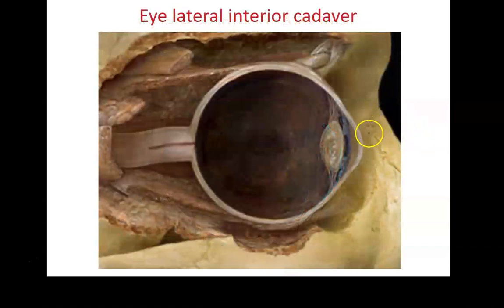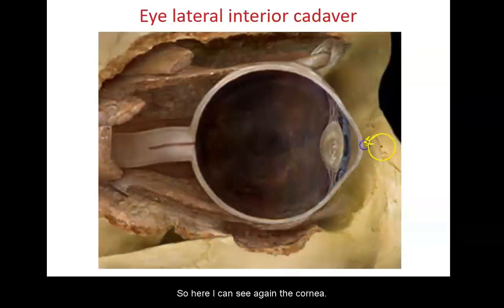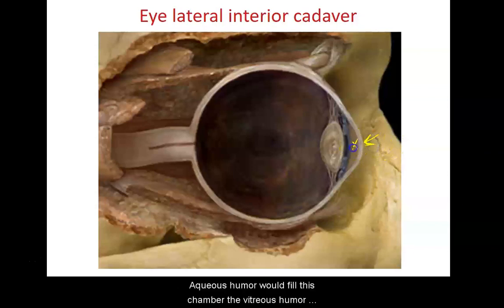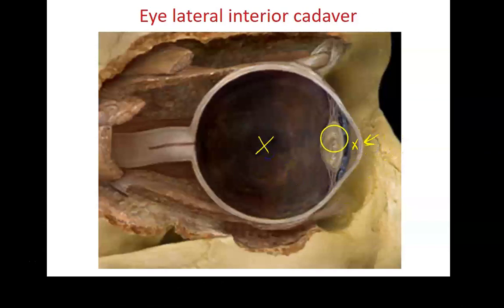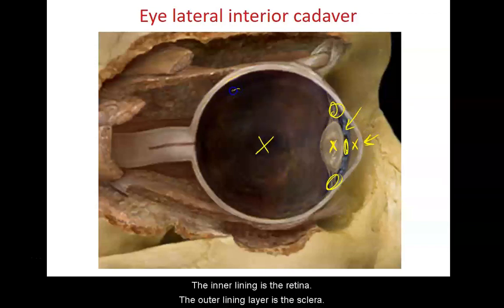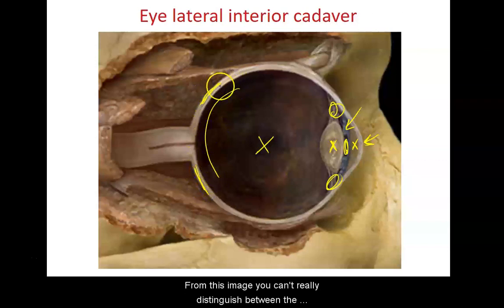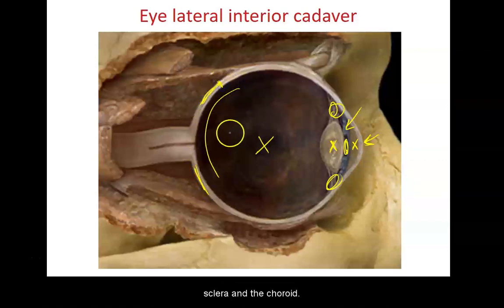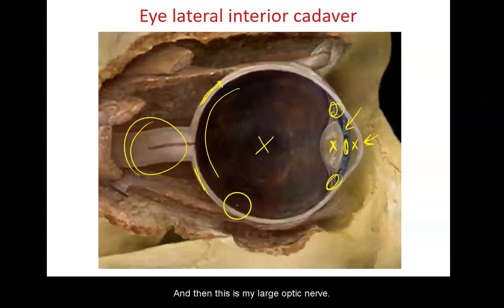This is a view from a cadaver. Here we can see the cornea; the aqueous humor fills the anterior chamber and the vitreous humor fills the posterior chamber. We can identify the lens, the ciliary body, the pupil, and the iris. The inner lining is the retina and the outer lining is the sclera. From this image you can't really distinguish between the sclera and the choroid, and this is the large optic nerve.